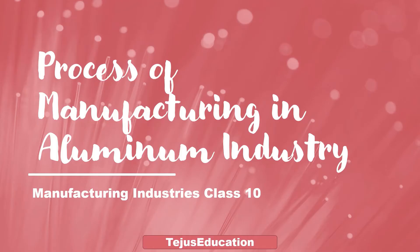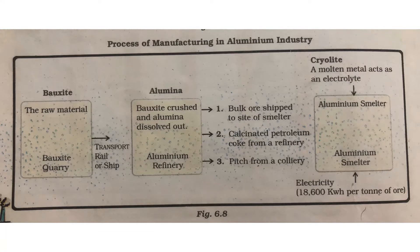Hello, welcome to Tejas Education. Today we are going to learn about how aluminum is produced. Let's learn how aluminum is manufactured. This is the first square — here you see it is written 'bauxite'.